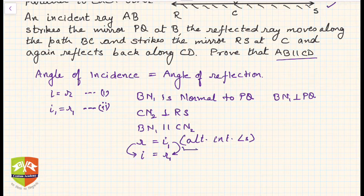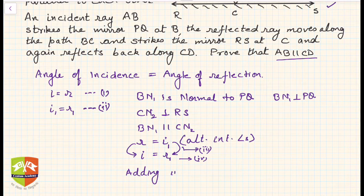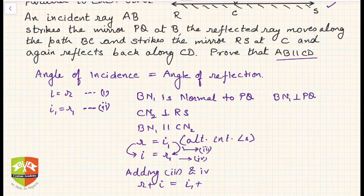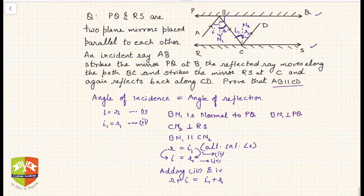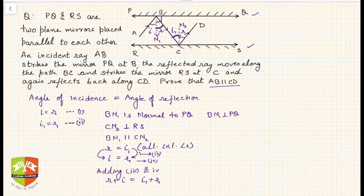These are the two new equations. Let's say this equation was 3 and this was 4. So add 3 and 4. Adding 3 and 4, we will get r plus i in the left hand side equals i1 plus r1 in the right hand side. Now let us understand what is i1 and r1.